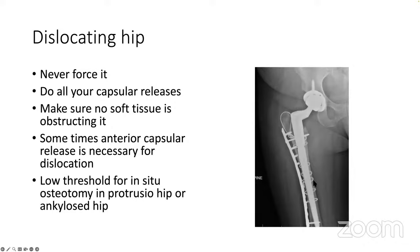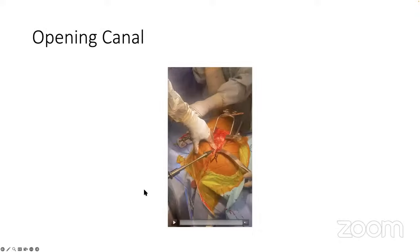This is a case where, when trying to dislocate the hip, a spiral fracture of the femur occurred. Now what was a very simple hip gets very complicated — you end up with a modular fluted taper stem with multiple wires and a plate. It can get really complicated from a simple surgery by trying to force the hip to dislocate.